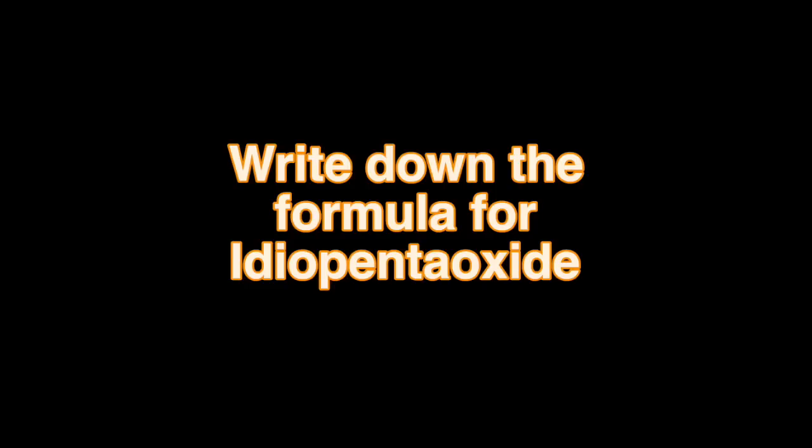Without further ado, let's dive straight into the questions. We'll be covering the remaining chemistry question and then the maths interview question. Question number one: write down the formula for iodopentaoxide. When you first hear this question, the best thing to do is to start thinking about breaking down the words in the name.